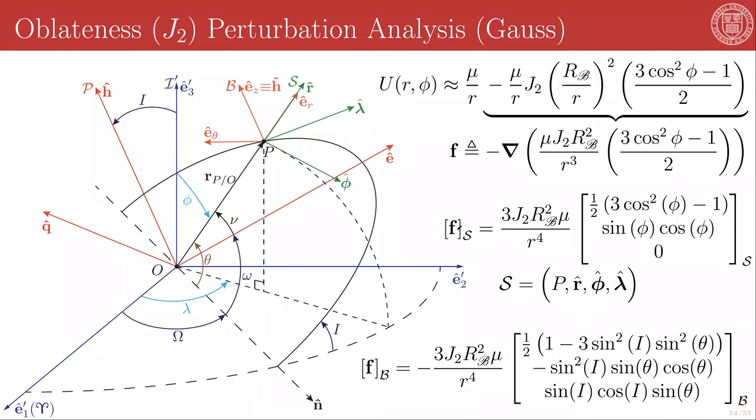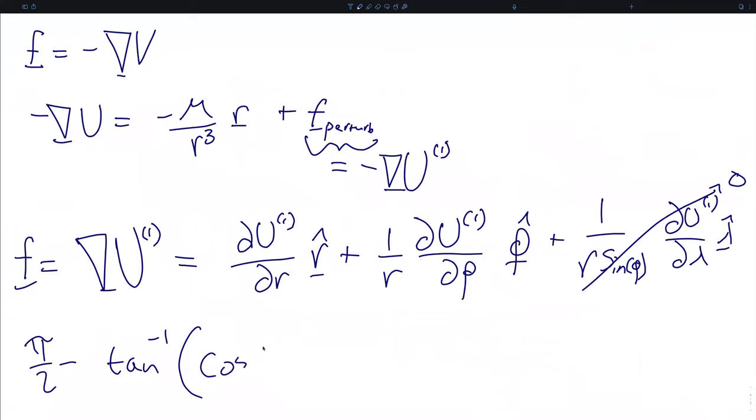In order to get the perturbing force vector into components of the B frame, we need to define the direction cosine matrix relating the S and B frames. Since these two frames share the same first unit direction, that is, since E hat R is the same as R hat, we know that this direction cosine matrix will be given by a rotation about this unit direction. Using the same bit of spherical trigonometry that we used in our original derivation of Lagrange's planetary equations, we can find that the angle of rotation is given by pi over two minus the arc tangent of cosine theta times the tangent of the inclination.